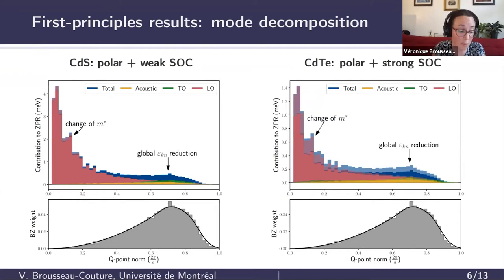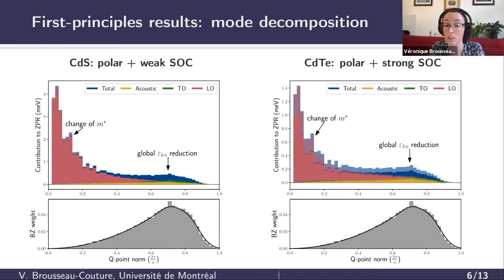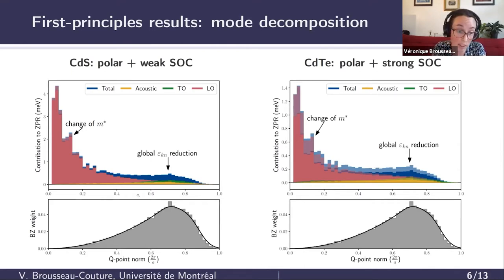We can further refine this analysis with a mode decomposition of the ZPR for cadmium selenide. In the small q regime, the reduction is entirely dominated by the LO mode shown in red, confirming the Fröhlich picture, while in the large q regime it originates almost equally from all the different modes. This is a feature we absolutely do not see in cadmium sulfide, and these observations will prove important for understanding the results from the generalized Fröhlich model shown later.